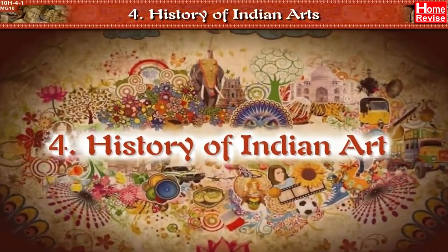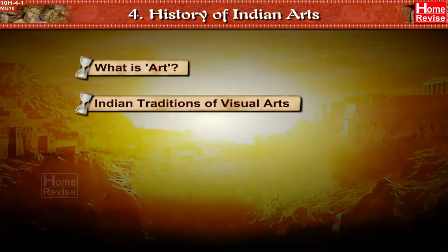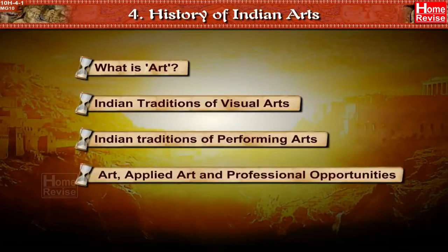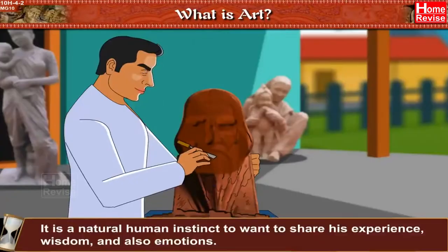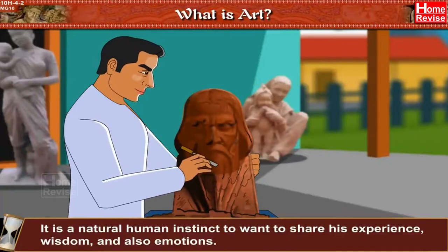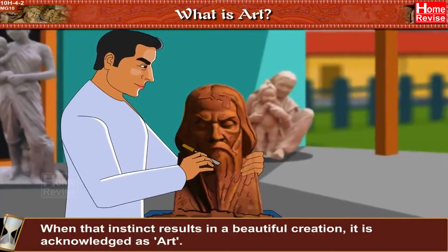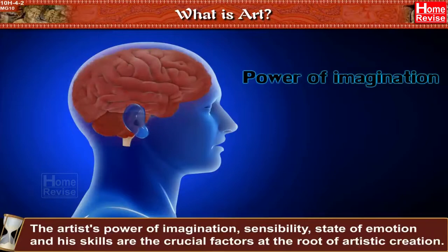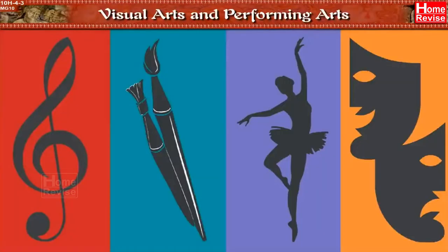Chapter 4: History of Indian Arts. What is art? It is a natural human instinct to want to share his experience, wisdom, and also emotions. When that instinct results in a beautiful creation, it is acknowledged as art. The artist's power of imagination, sensibility, state of emotion, and his skills are the crucial factors at the root of artistic creation.